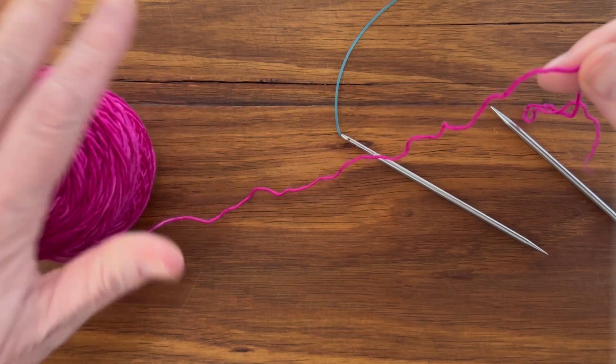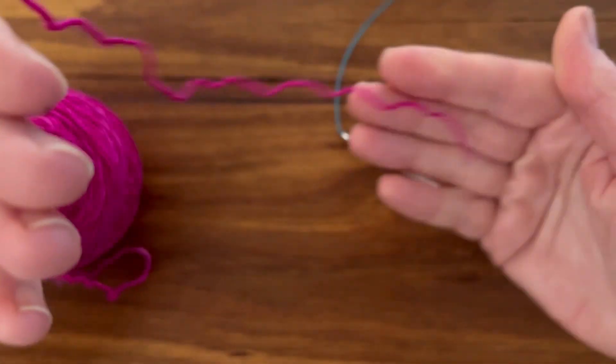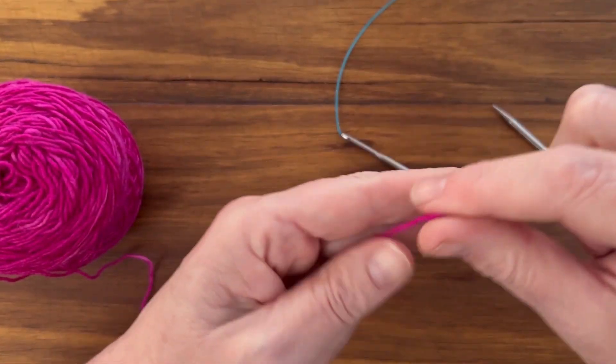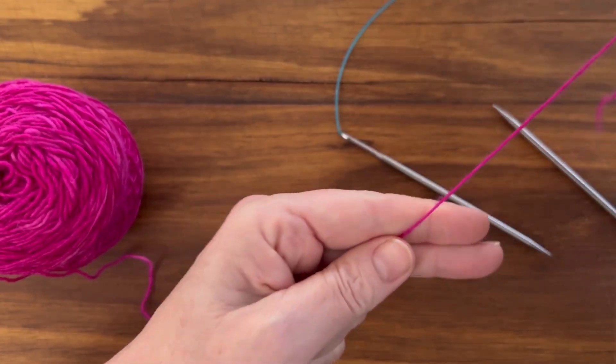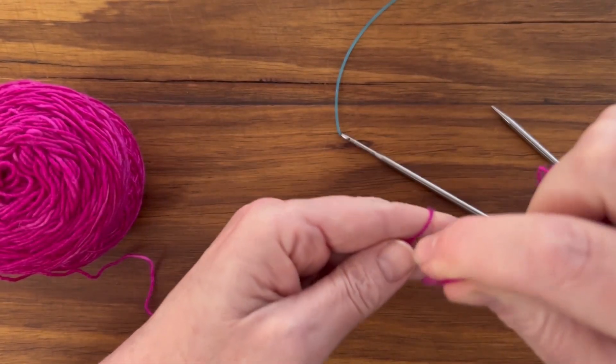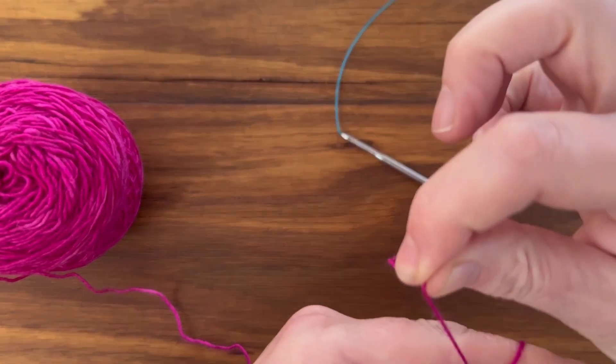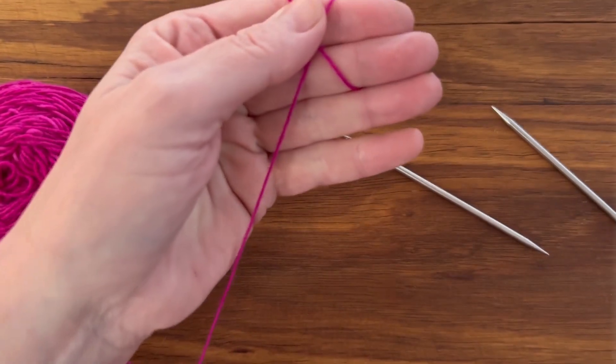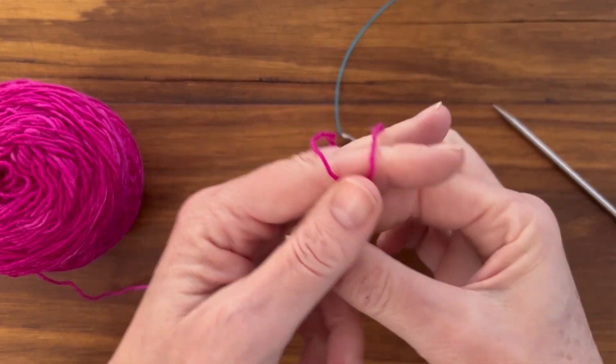Have the yarn, the working end of the yarn on the left side, and the tail hold in your right hand. Use your thumb to hold the yarn in place and wrap over the top of your fingers and under. And have the tail yarn dangling over the back there. The working yarn is here underneath. And use your thumb to hold that in place.